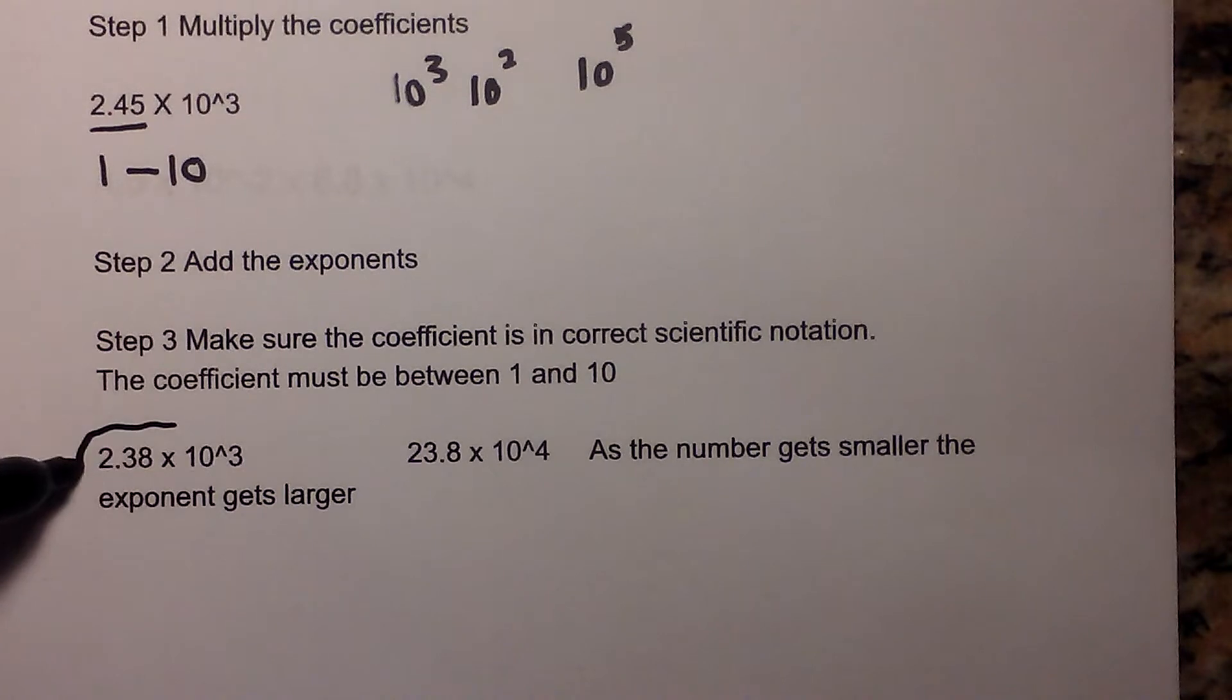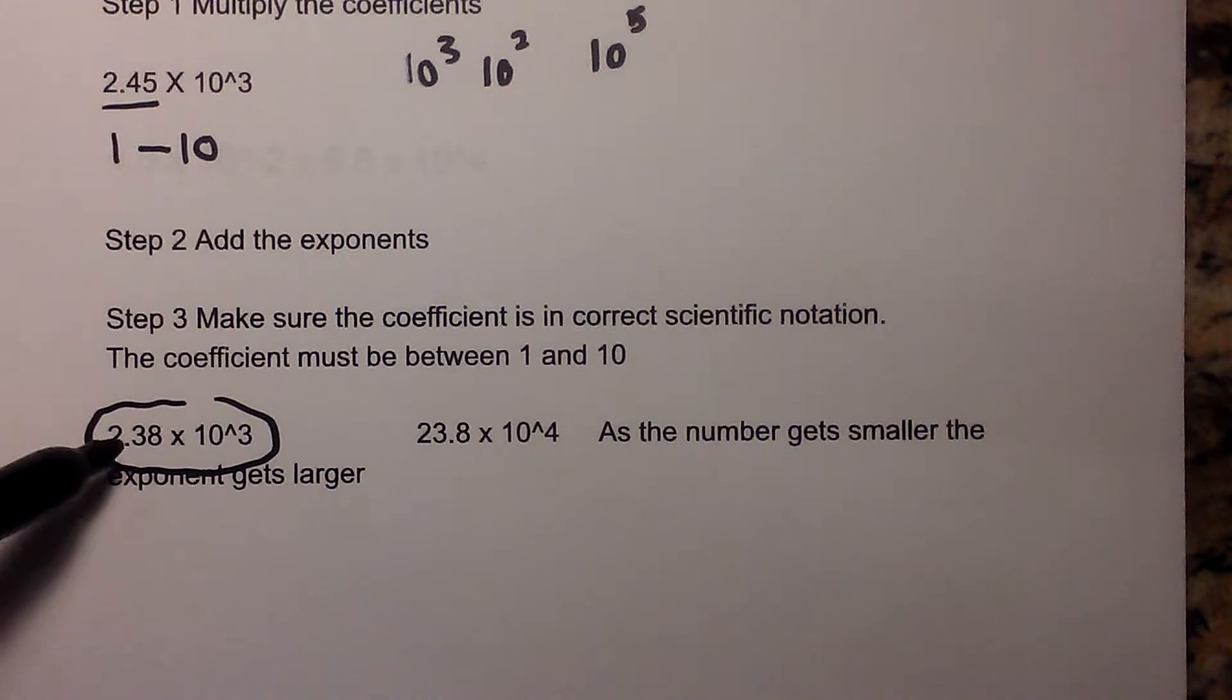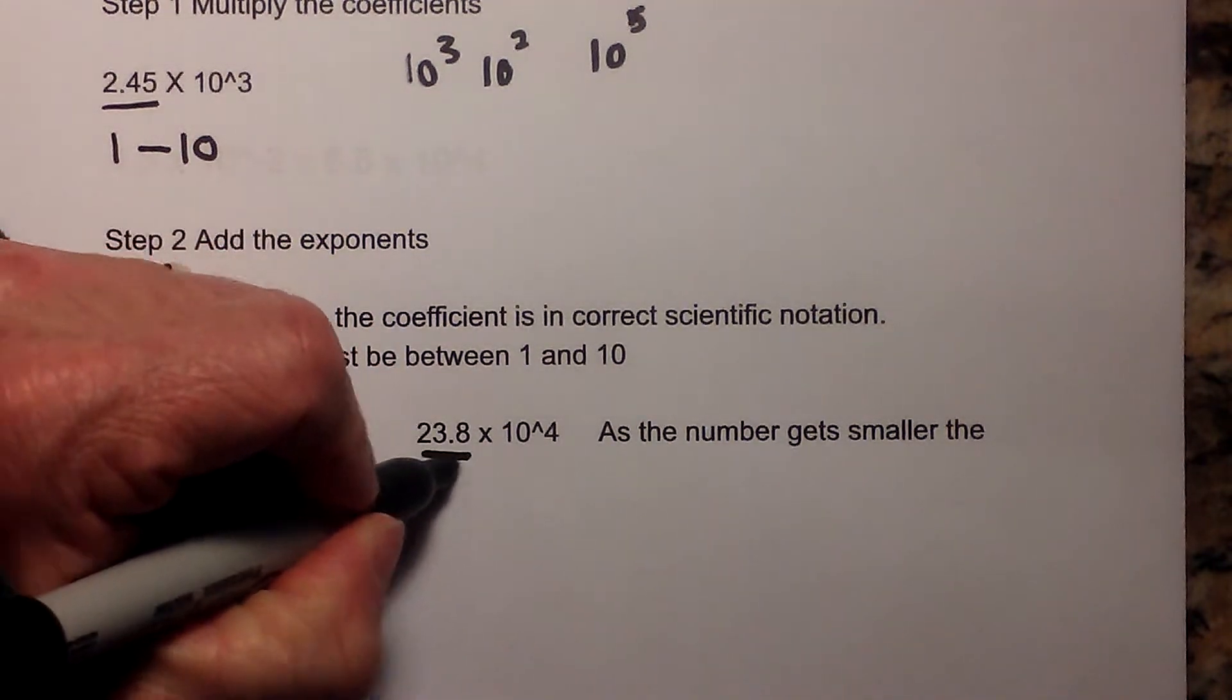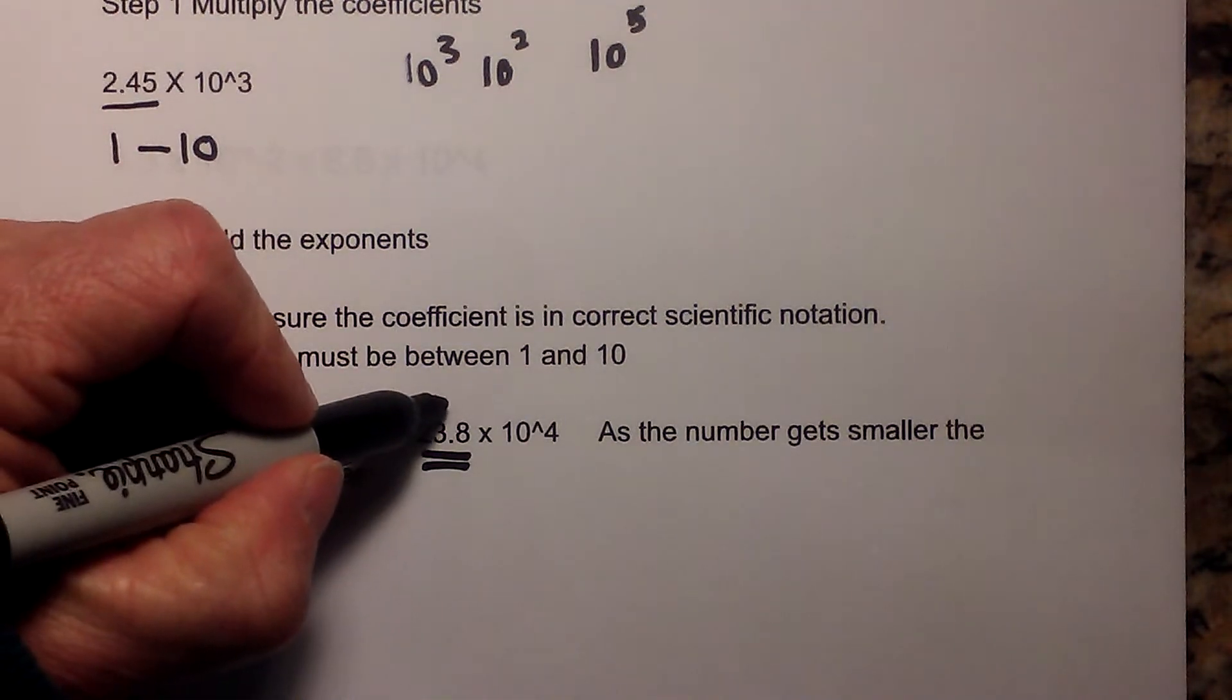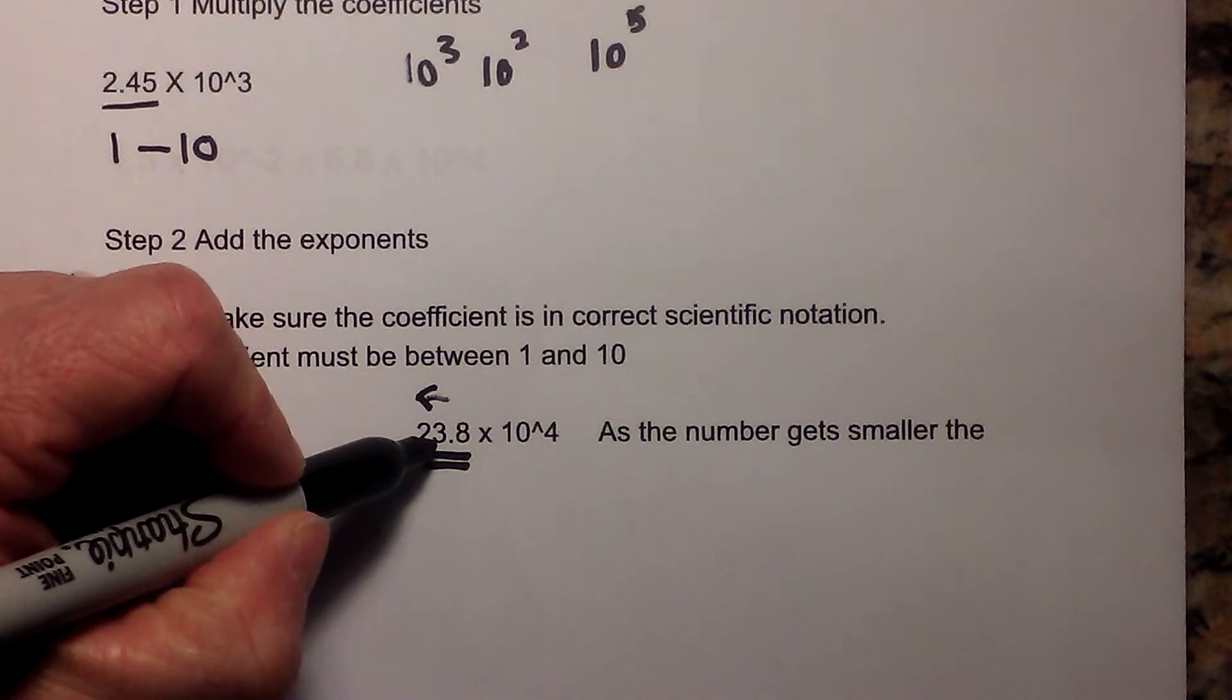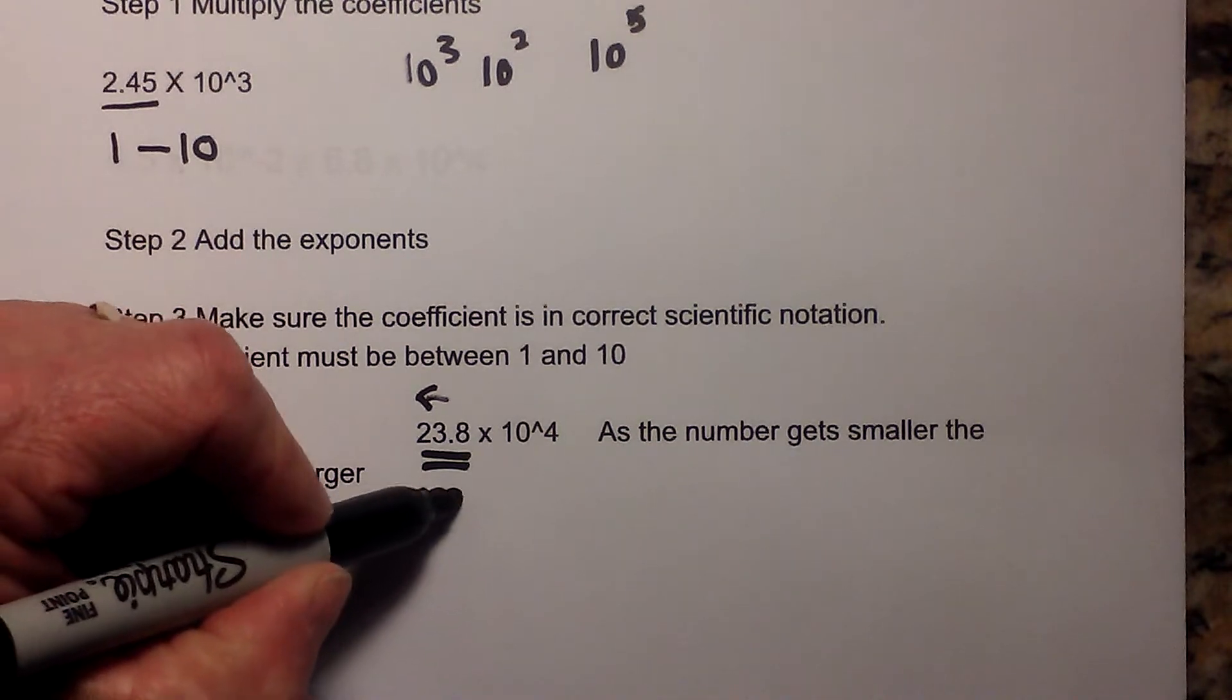This number is in correct scientific notation because the coefficient is between 1 and 10. This is not in correct scientific notation because 23 is greater than 10. So you will need to move the decimal 1 to the left. That makes 23.8 a smaller number because it makes it 2.38.